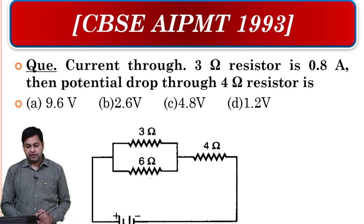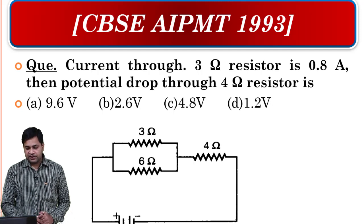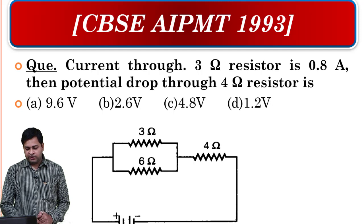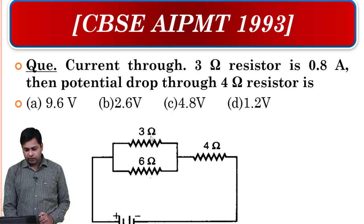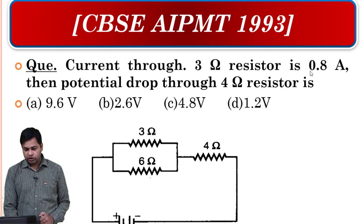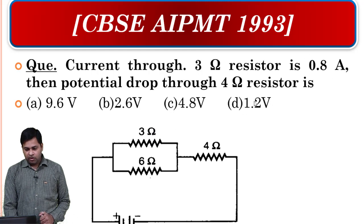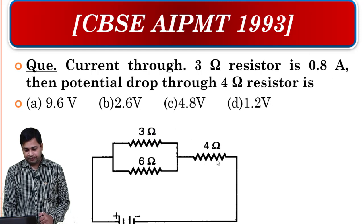Now here, what is given? It's told that through the 3-ohm branch, the 3-ohm resistor, the current is 0.8. And we need to find for 4-ohm, we need to find the potential drop.